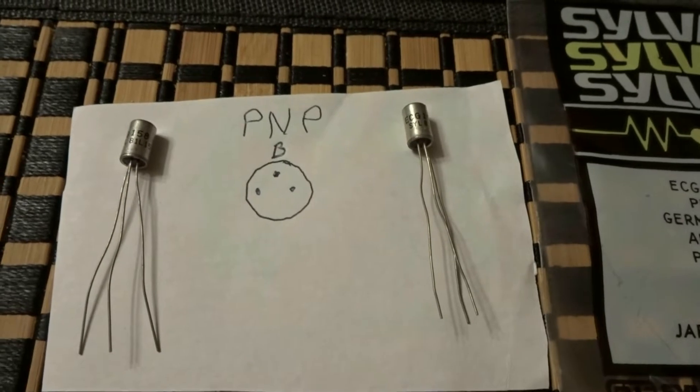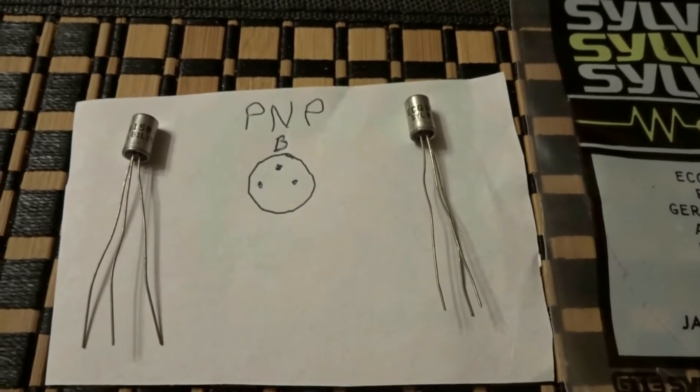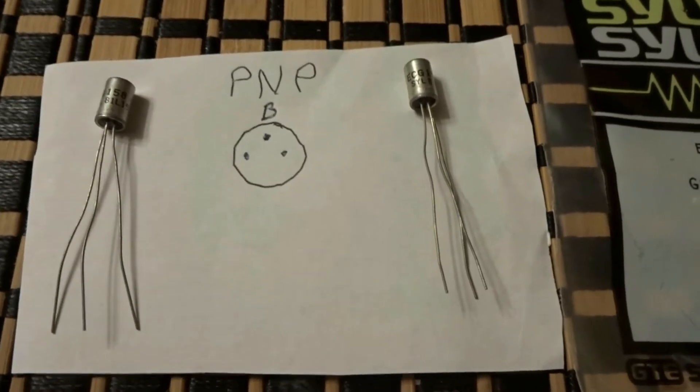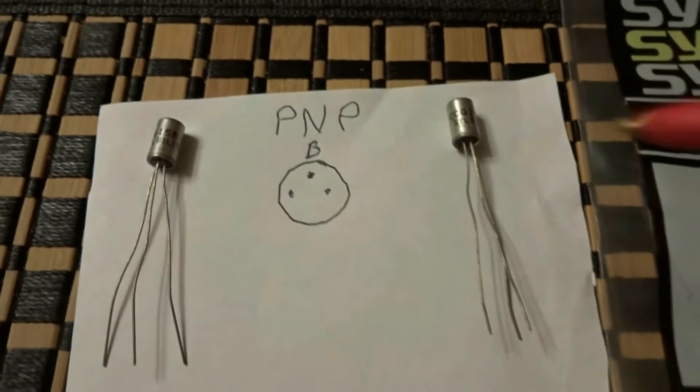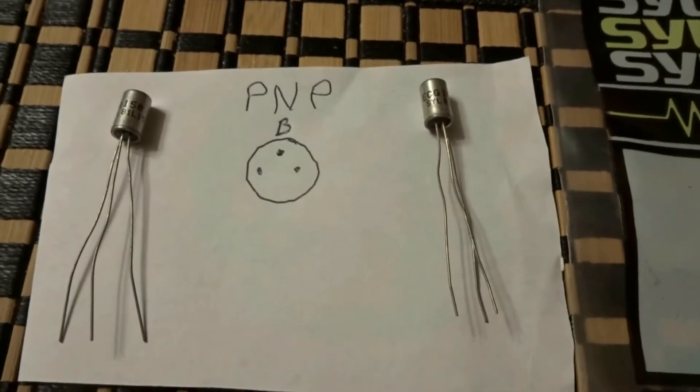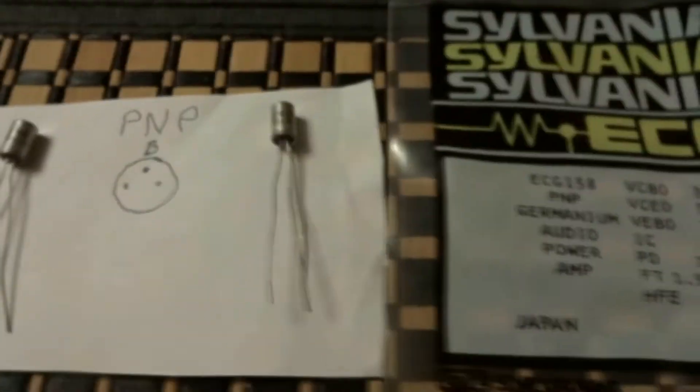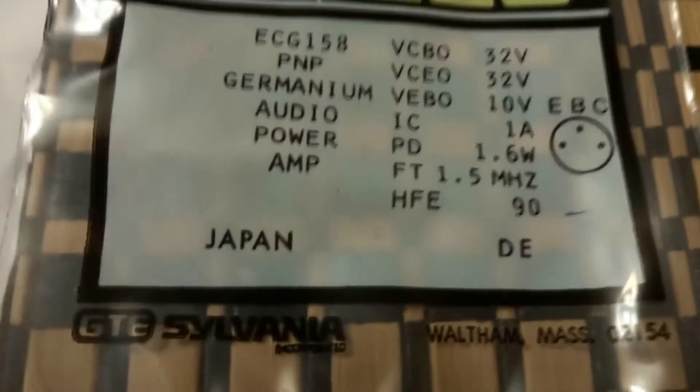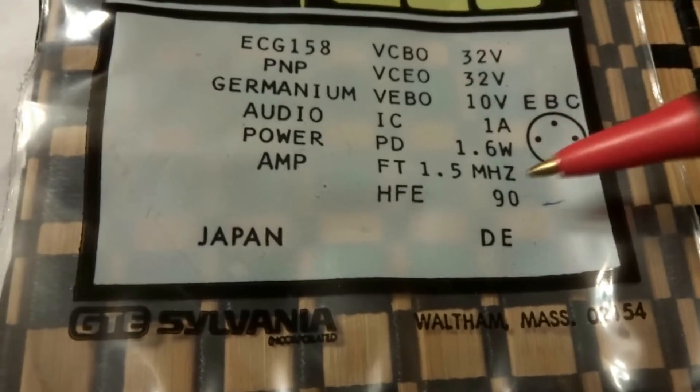Those happen to be NPN, which I explained in my last video. These are PNP. Sometimes you're gonna run across this where you have a transistor and you can't find a datasheet. These happen to come in a package, and you can see here it breaks down the voltages and the HFE. If you're looking at the transistor from the bottom, it shows the base, emitter, and collector.